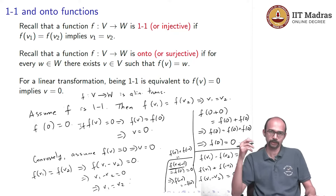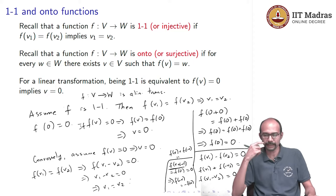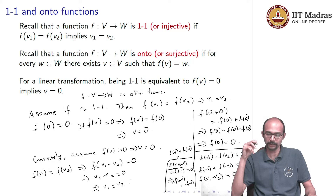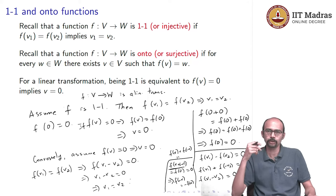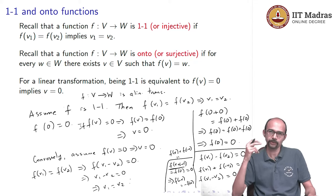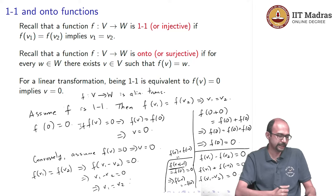In general, for an arbitrary function checking one-to-one means checking that f(v1) = f(v2) implies v1 = v2. But for a linear transformation, you can instead just check that f(v) = 0 implies v = 0. This special set — the vectors that map to 0 — is a subspace, and we will study it later.